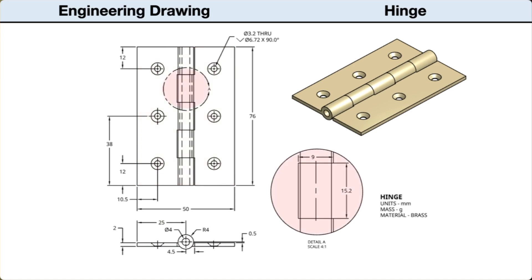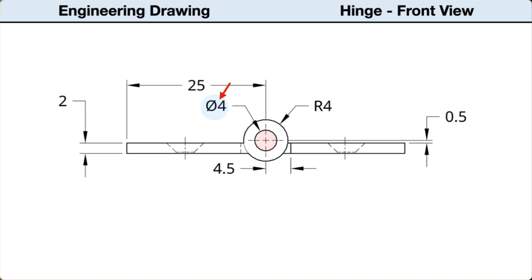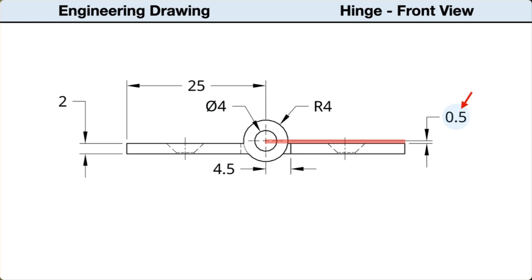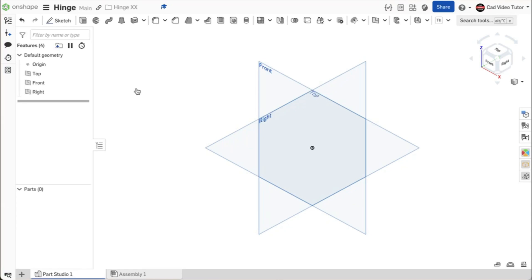There is a detail view which shows the dimensions of one hinge barrel. Looking closer at the front view, the hole for the hinge pin has a diameter of 4 millimeters. The outside diameter of the barrel is 8 millimeters. The distance from the center to the outside edge of one leaf is 25 millimeters. The thickness of the leaf is 2 millimeters. Measuring from the center point of the barrel, the top face of the leaf is 0.5 millimeters below.